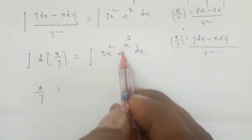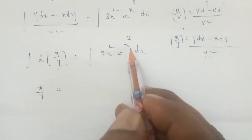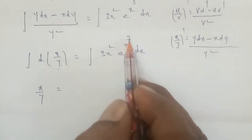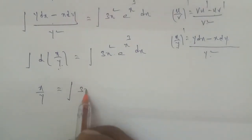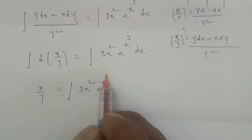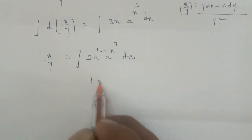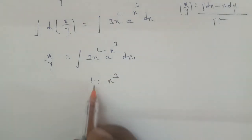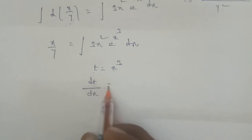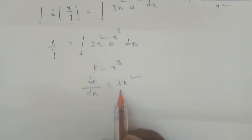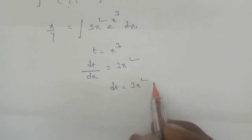For the right-hand side, we use substitution since we have a power-to-power form. Let t equal x cubed. Differentiating with respect to x gives dt by dx equals 3x squared, so dt equals 3x squared dx.